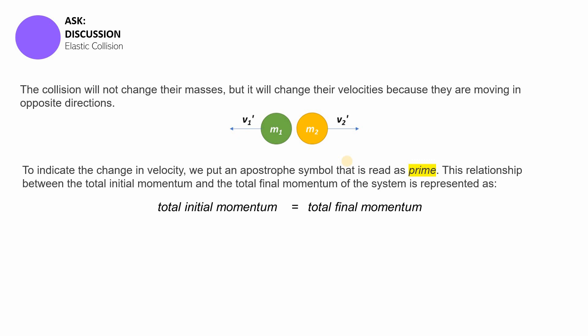So the momentum of the objects, in this case the balls, after they collide, is going to be the total final momentum. So let's give it a try. Again, the total initial momentum, it's the total momentum, the combined momentum of the green and yellow ball before the collision. Then when they collided, that was the marker of the change in momentum. And they're still moving. So that momentum after the collision, when you add them up, the green and yellow, you'll get the total final momentum.